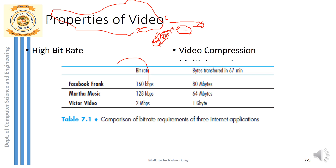Let's take a comparison example with three users. The first user is accessing Facebook, viewing photos of size 160 kbps — so 80 megabytes of data is transferred. The second user, Martha, wants to listen to music using an MP3 player, playing music of size 128 kbps — 64 megabytes of data is transferred for music. The third user, Victor, is trying to watch a video, which requires more bandwidth — one gigabyte of data is transferred, at a rate of 2 megabytes per second downloaded at the client side.